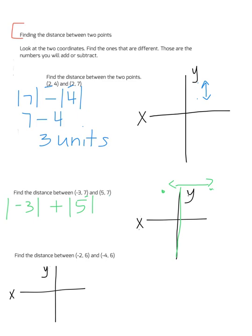So to go from here to here, that's your absolute value of 3, which is 3. And then we have to go over 5 more spaces, which gives you 5, and those two points are 8 units apart.